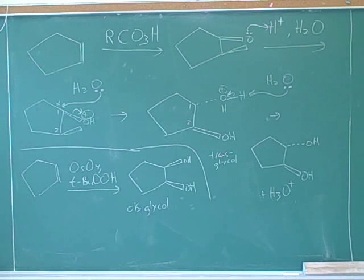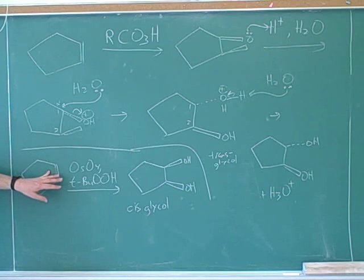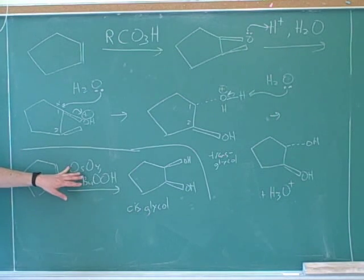So if you're doing a synthesis problem and you're trying to make a cis-glycol, well, make an alkene, and then you can use osmium tetroxide.